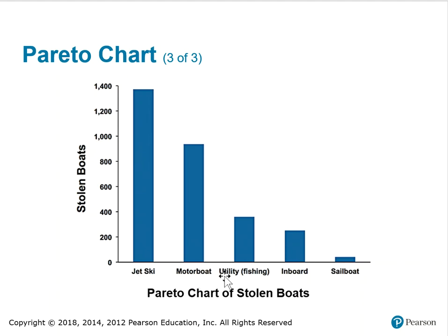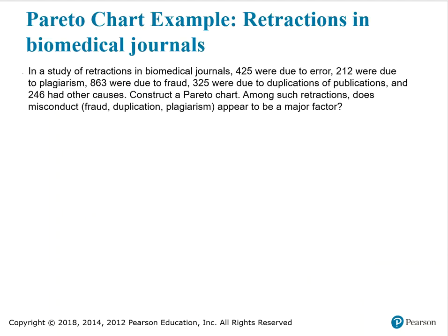Here's an example of a Pareto chart of stolen boats. The type of boat is the category across the bottom — categorical data — and the number of stolen boats is on the vertical axis. Now let's construct a Pareto chart for retractions in biomedical journals. In a study of retractions: 425 were due to error, 212 due to plagiarism, 863 due to fraud, 325 due to duplication of publications, and 246 had other causes.